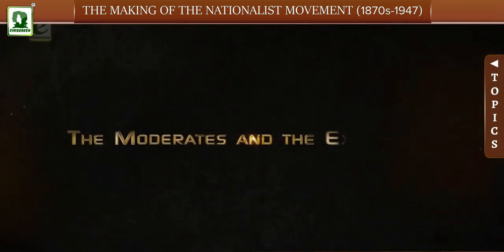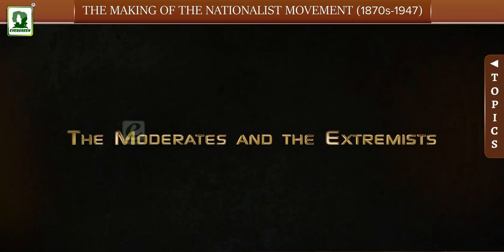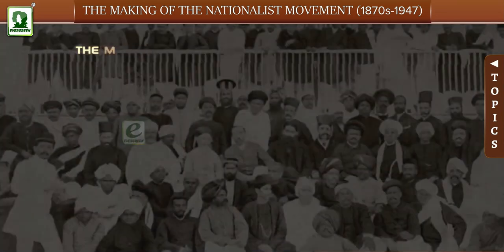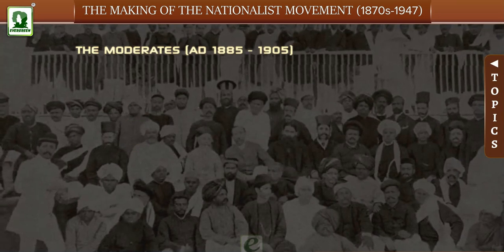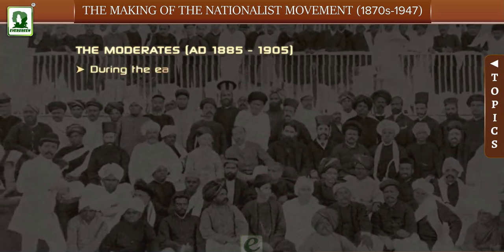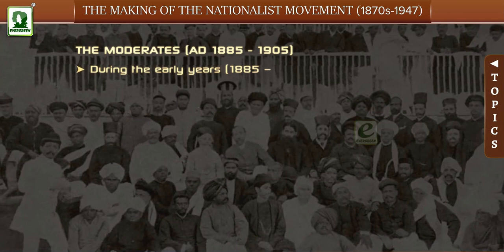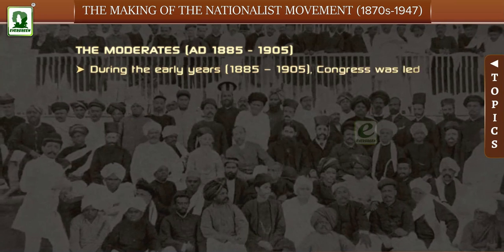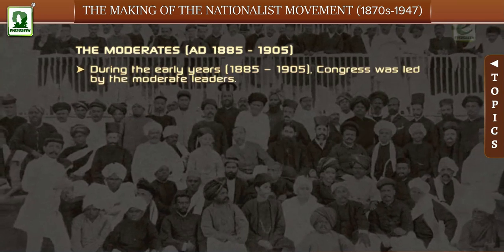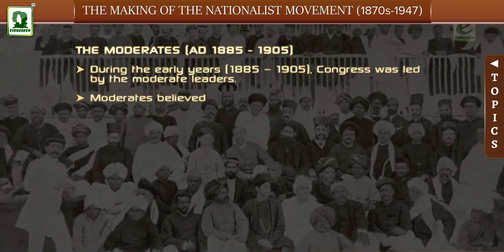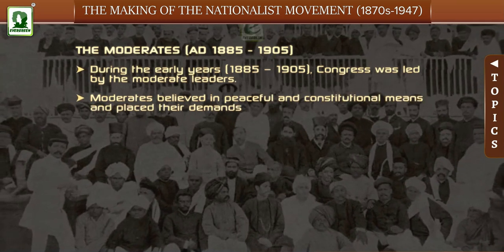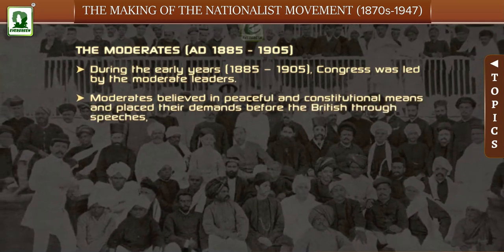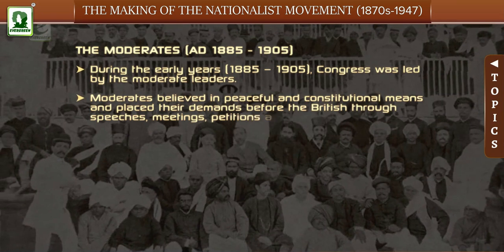The Moderates and the Extremists: During the early years from 1885 to 1905, Congress was led by moderate leaders. Moderates believed in peaceful and constitutional means and placed their demands before the British through speeches, meetings, petitions, and resolutions.